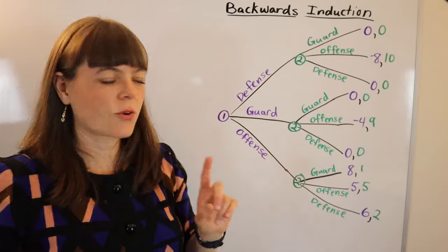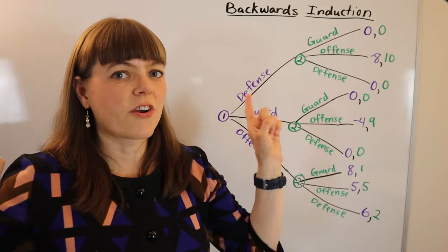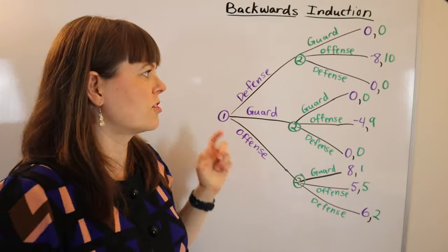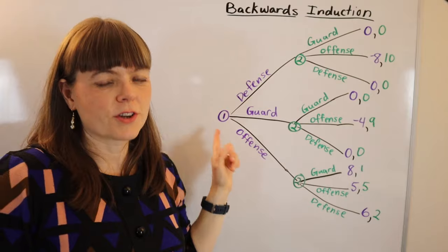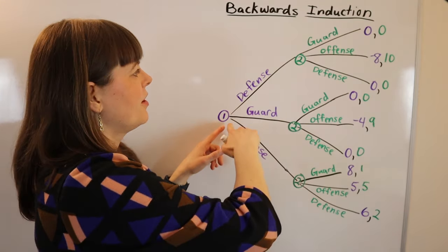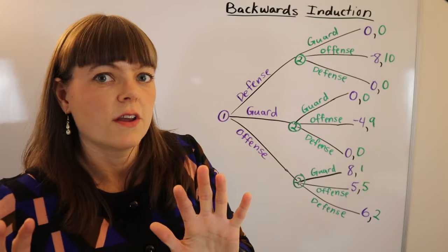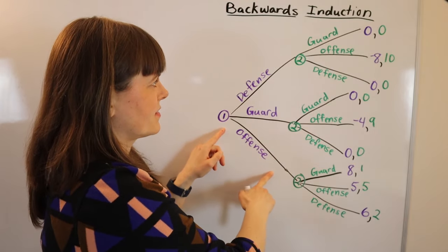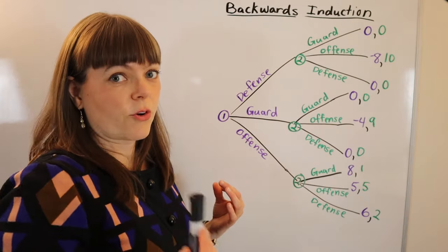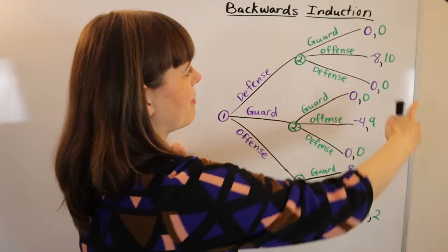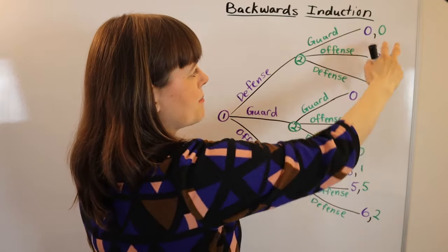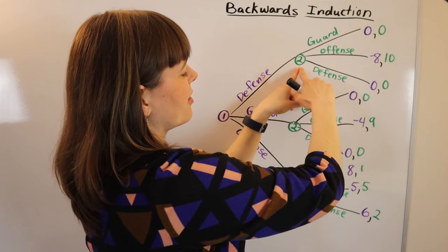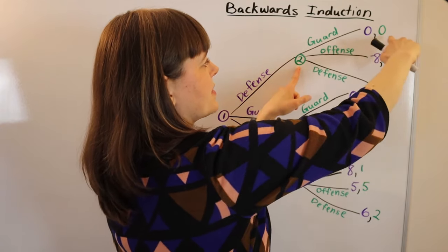Let's do one more example — a capture the flag scenario with two players. You're deciding your move knowing the other player will observe it and respond. The three options are: play defense, guard your flag, or play offense. The other player has the same three options. We solve this using backwards induction by identifying the end nodes and determining what each player will do.